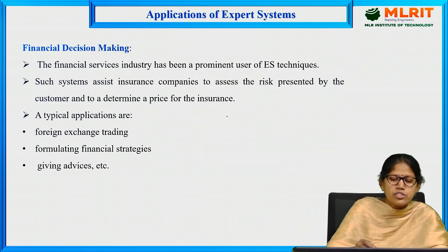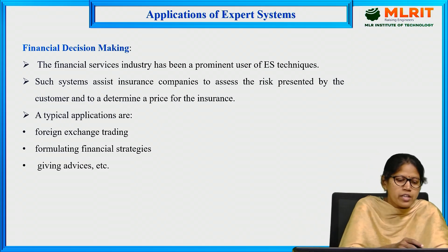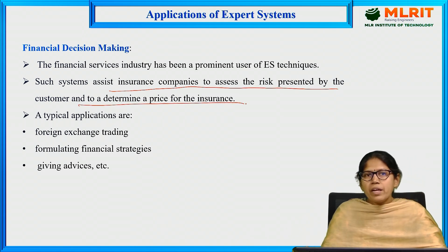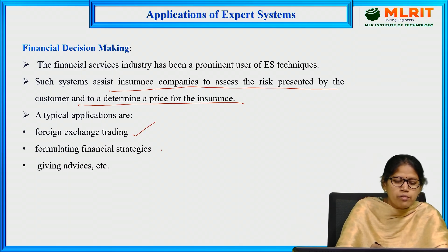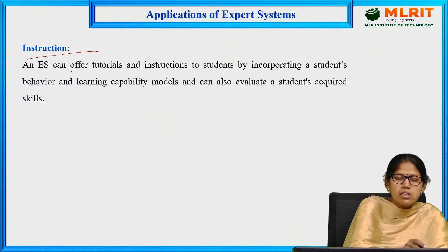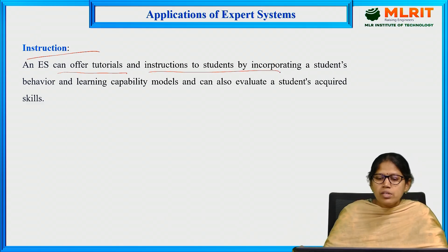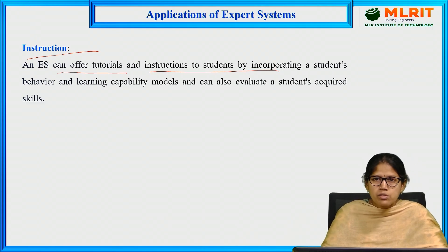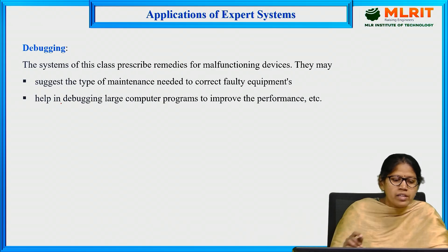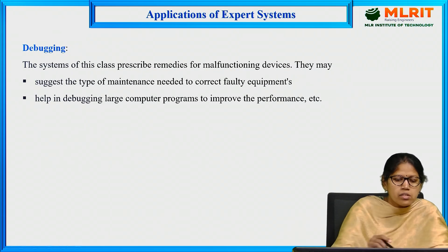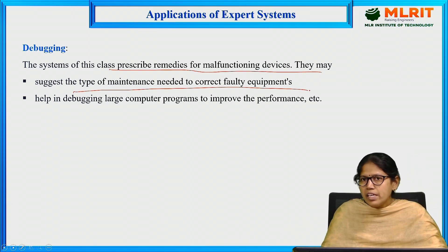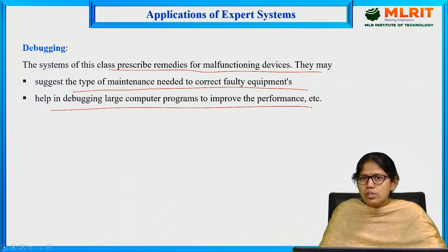Financial decision making plays a major role in expert systems. These systems assist insurance companies in assessing the risk presented by a customer and determining a price for the insurance. Examples include foreign exchange trading, formulating financial strategies, and giving financial advice. The next application is instructions — expert systems can offer tutorials and instructions to students by incorporating a student's performance and behavior, and evaluate a student's acquired skills. The next application is debugging, where expert systems prescribe remedies for malfunctioning devices, suggest the type of maintenance needed to correct faulty equipment, and help in debugging large computer programs to improve performance.